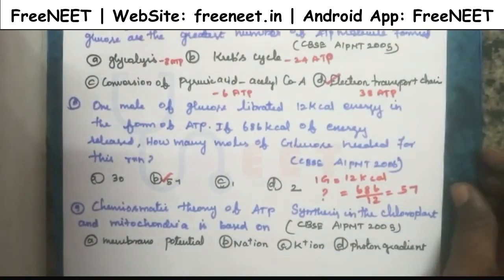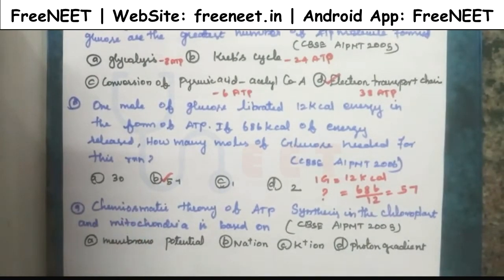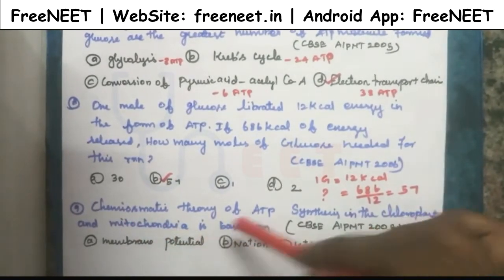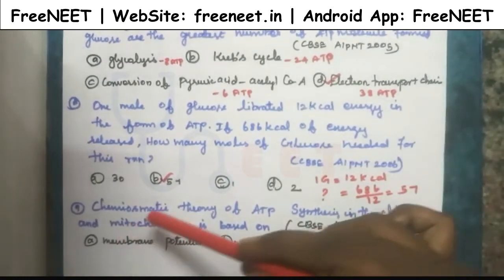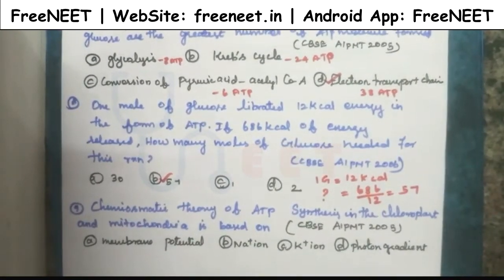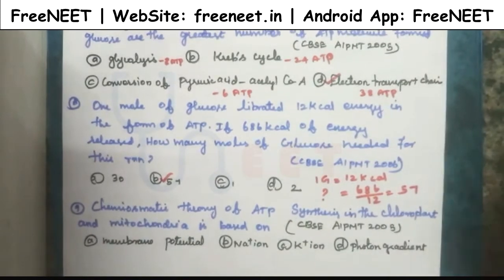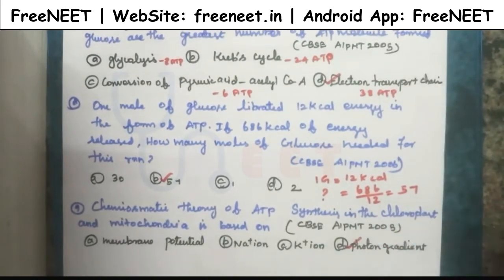The next question: the chemiosmotic theory of ATP synthesis in the chloroplast and mitochondria is based on what? Chloroplasts and mitochondria play a major role in absorbing protons. So the answer is the proton gradient.